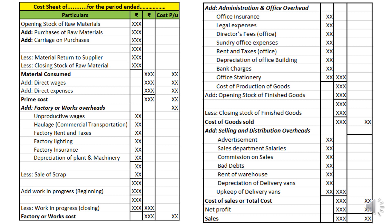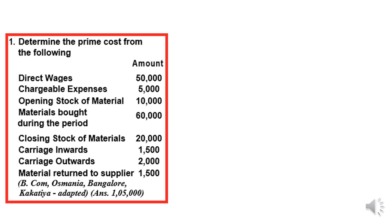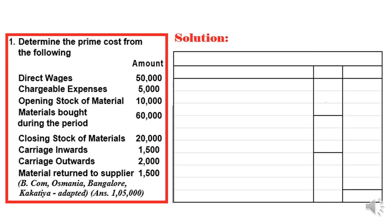This is the basic format of the cost sheet. Cost sheet preparation is one of the easiest chapters of cost accounting. Let's take up four questions of different types so you can understand how to solve problems in university examinations. In the first problem, information provided includes direct wages, chargeable expenses (direct expenses), opening stock of raw material, material purchased, closing stock of material, carriage inwards, carriage outwards, and material returned to supplier. We are asked to calculate prime cost only.